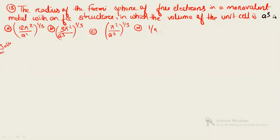The second question asks for the radius of the Fermi sphere for free electrons in a monovalent metal with an FCC structure, where the volume of the unit cell is given as a cube. You are asked to calculate the Fermi sphere radius. Directly write the formula for the Fermi wave vector k_F.